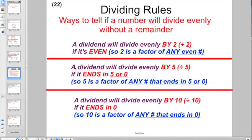We told you that a dividend will divide evenly by 5 if it ends in 5 or 0. So you've got to make the connection that 5 is a factor of any number that ends in 5 or 0.